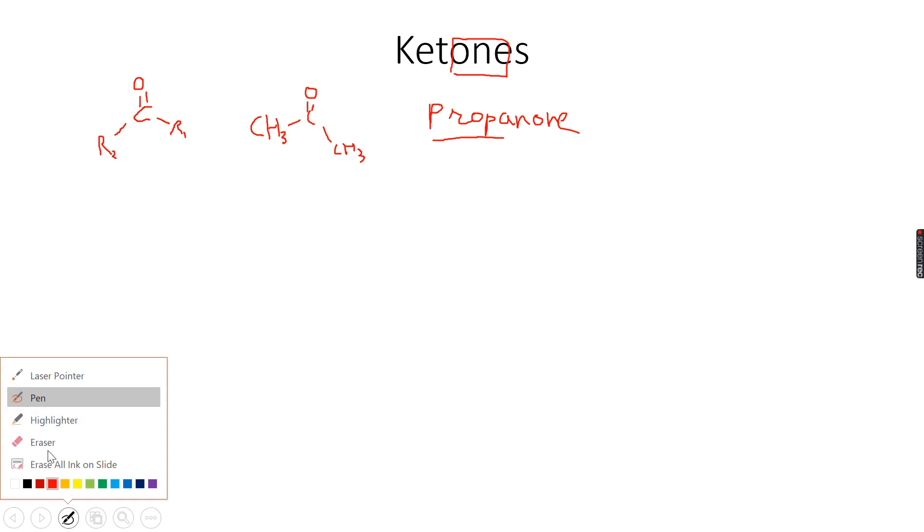So let's do some more examples. So propanone is the simplest type of ketone. You cannot have any ketone with less number of carbon atoms. So we can have butanone. You can see that the carbonyl functional group, the carbonyl group can only be on the second carbon atom in this case, because obviously if you put it on the first, then it will become butanal, which is the aldehyde. So this is butanone.